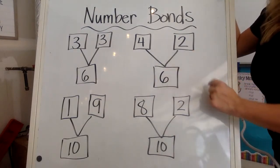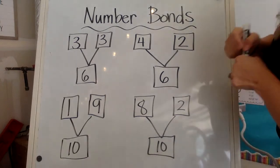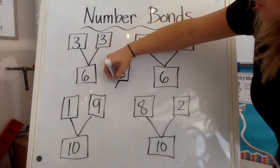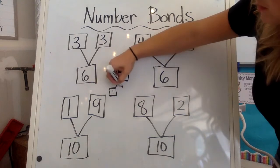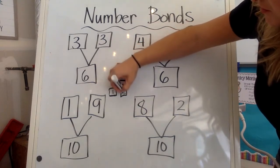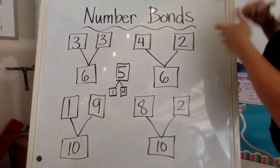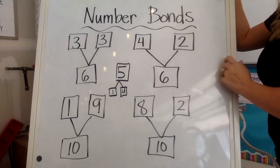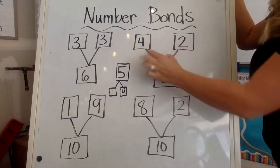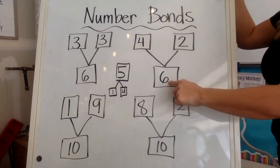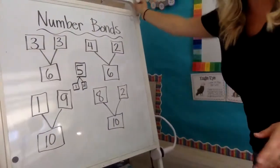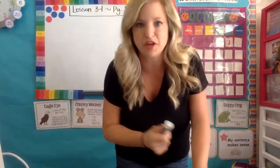You can also flip this — you could have ten up at the top and then it splits into two different bonds. So five could be broken down into one and four, so it can go both ways. These add together to make six, so these are called addends. Remember when you're adding something together, this is an addend and this is an addend, to equal a sum or a total of six.